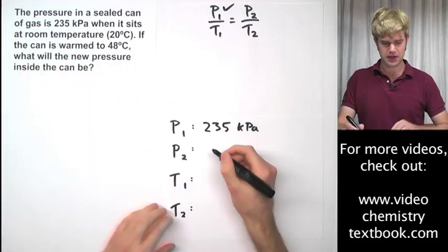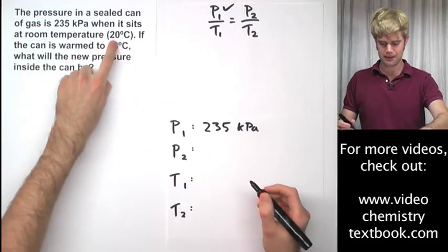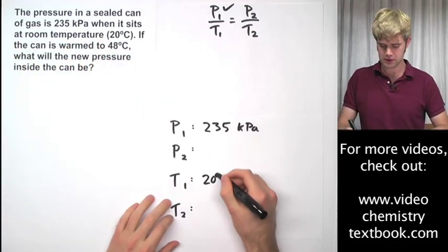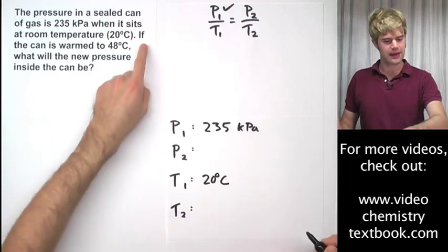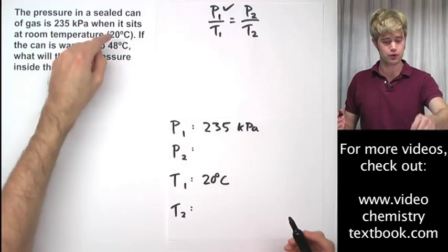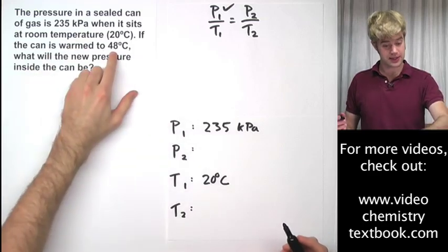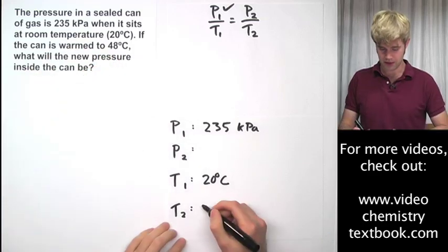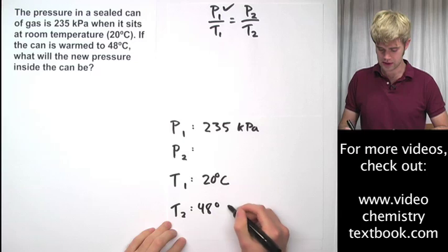P1 is going to be 235 kPa. So we know this guy up here. When it sits at room temperature, so this is the initial temperature, 20 degrees Celsius. And then the can is warm to 48 degrees Celsius. So there's our change. We go from 20 to 48, so our second temperature, our final temperature is going to be 48 degrees Celsius.